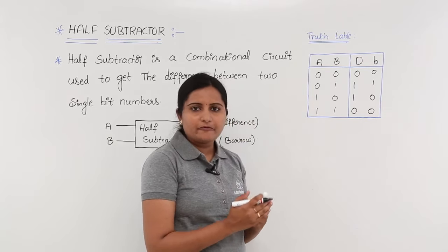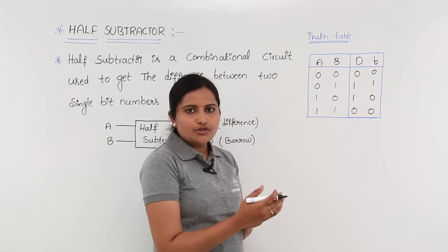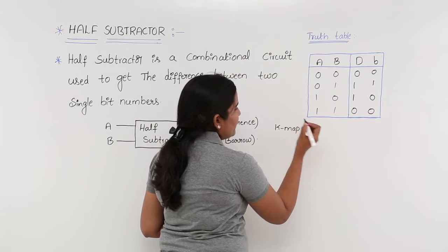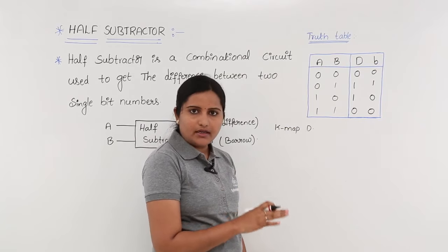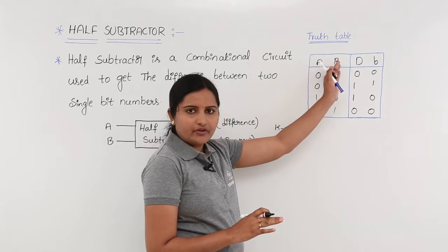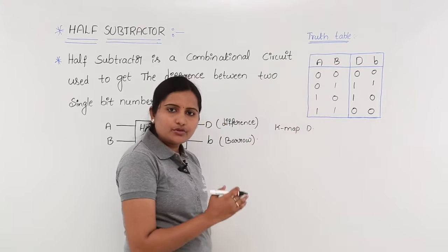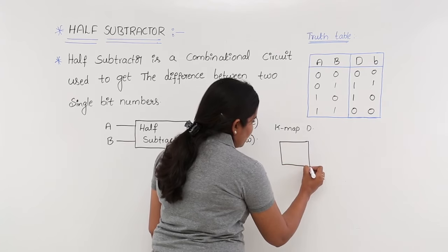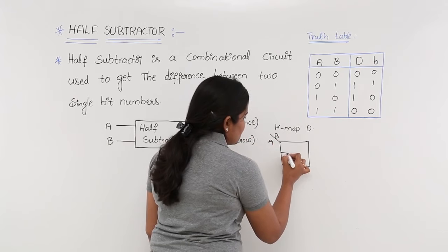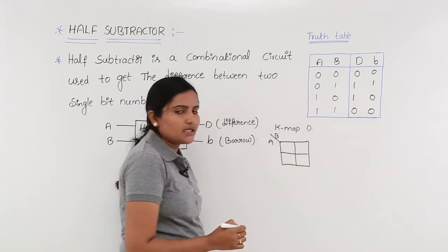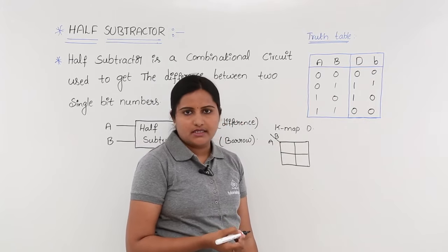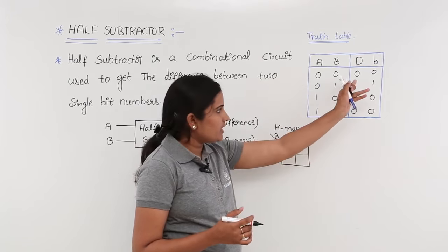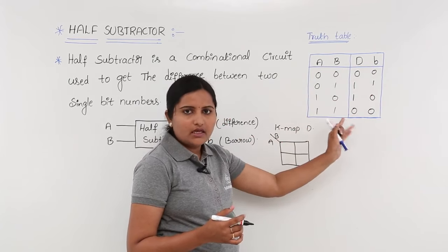Now we consider the K-map for both difference and borrow to get the logical expressions. I am considering the K-map for difference. The number of variable K-map depends on the number of input variables, which here is 2, so we use a 2-variable K-map containing A and B with 4 cells. In this K-map for difference, we place 1s wherever there are 1s in the difference column of the truth table.